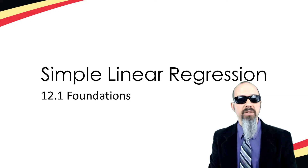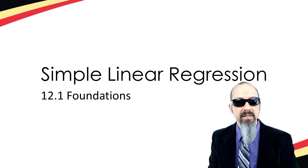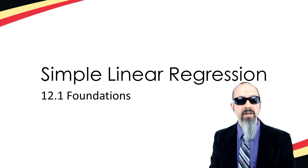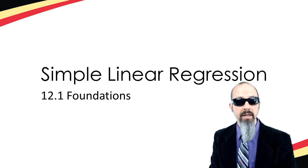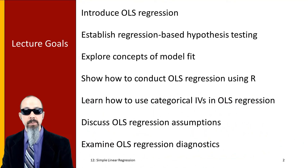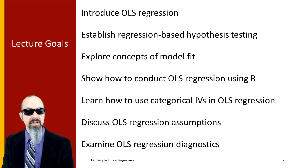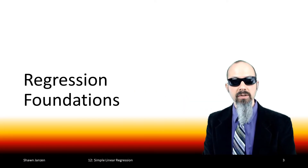Hey data junkies, welcome back. We're starting a brand new topic module here on simple linear regression. This is going to be a somewhat longer module because regression is a large topic. This will cover simple linear regression with one independent variable, and we'll then take it to multiple linear regression in the following modules. In this video series, we're going to be talking about OLS — the ordinary least squares regression — model fit, conducting it in R, incorporating categorical variables, and regression assumptions and diagnostic tests.